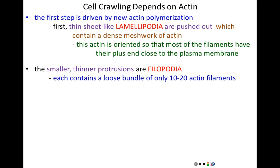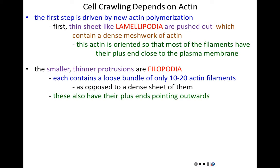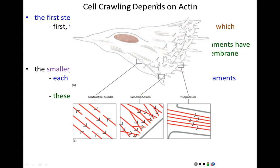Each filopodium is constructed of actin, but in a different way — it contains bundled actin filaments. Each filopodium contains about 10 to 20 bundled actin filaments, as opposed to the dense interwoven sheet of actin in the lamellipodia. The actin in filopodia is also oriented by polarity — plus ends pointing outwards — with bundled actin filaments lying parallel to each other, with all their plus ends pointing towards the tip of the filopodium.